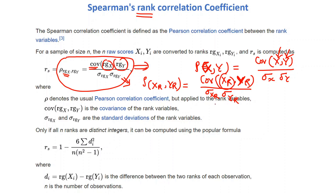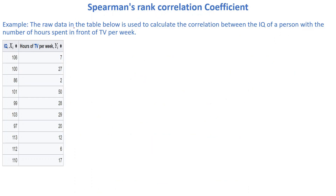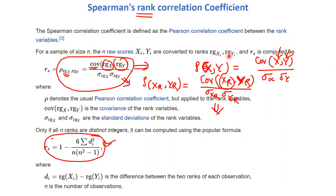Let's discuss how we use ranks with an example. The raw data in a table shows the IQ of a person and the number of hours spent in front of TV per week. We want to know the relationship between a person's IQ and how much time they spend watching TV. These are our two variables x and y. To use the Spearman formula, we first need to calculate the rank of x and the rank of y.